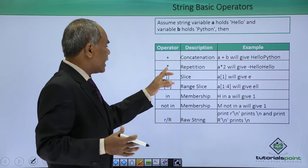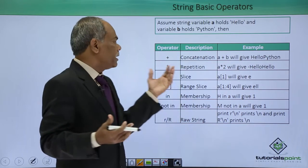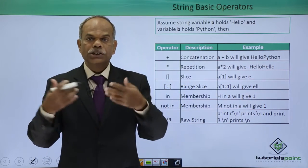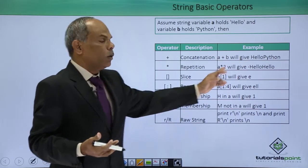Similarly, the star or asterisk, which otherwise will be a multiplication operator, here it will perform the repetition operation. That means a star 2 will result into hello hello.